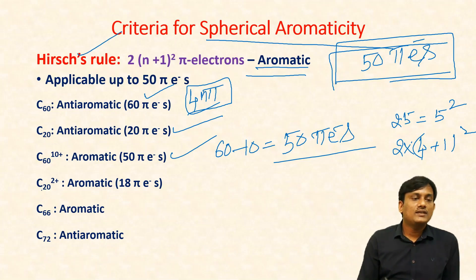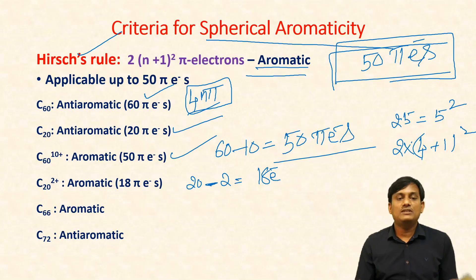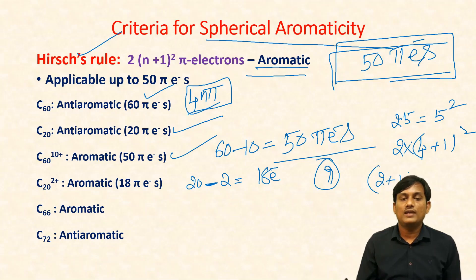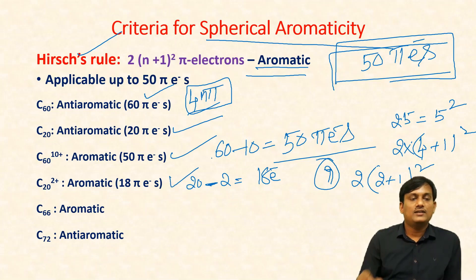Let us take C20²⁺. C20 has 20 pi electrons; a 2+ charge means removing 2 electrons, giving 18 electrons. Dividing by 2 gives 9, which can be written as 3², meaning (2+1)². So 18 = 2×(2+1)², which satisfies the 2(n+1)² form. Therefore, C20²⁺ is aromatic according to Hirsch's rule.